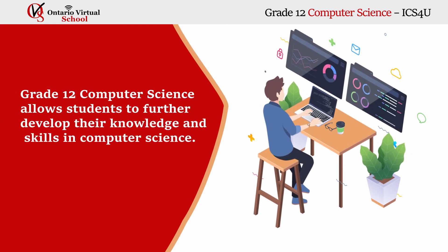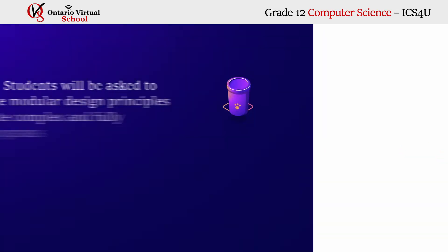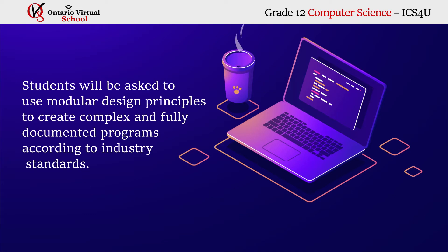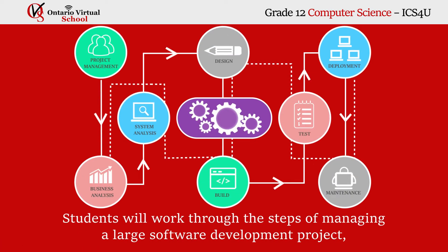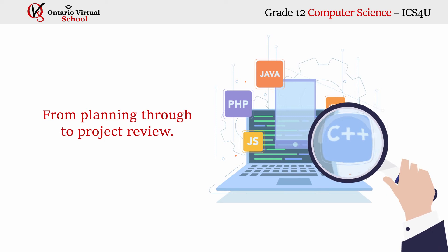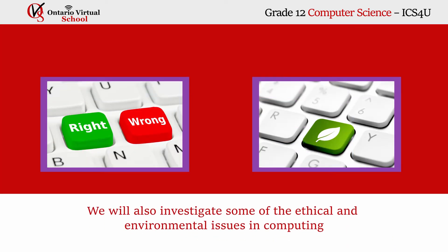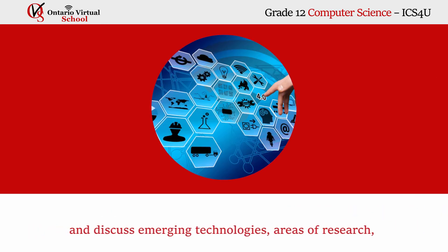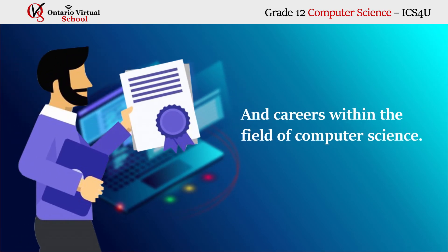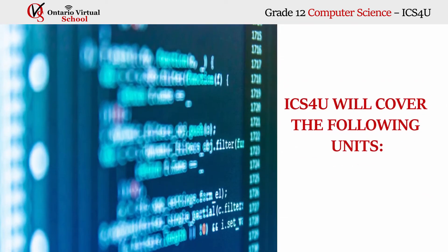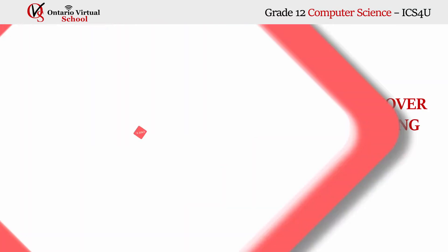Grade 12 Computer Science allows students to further develop their knowledge and skills in computer science. In this course, students will be asked to use modular design principles to create complex and fully documented programs according to industry standards. Throughout the various units, students will work through the steps of managing a large software development project from planning through to project review. We will also investigate some of the ethical and environmental issues in computing and discuss emerging technologies, areas of research, and careers within the field of computer science. ICS4U will cover the following units.